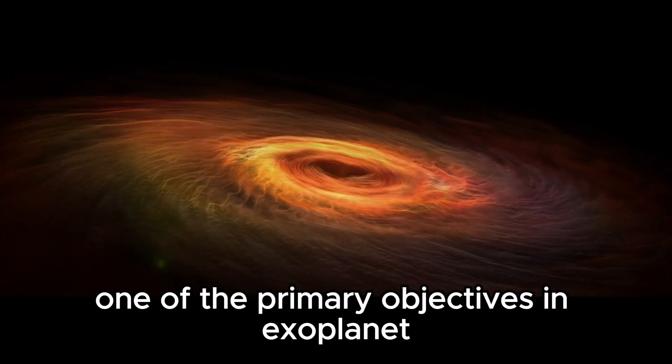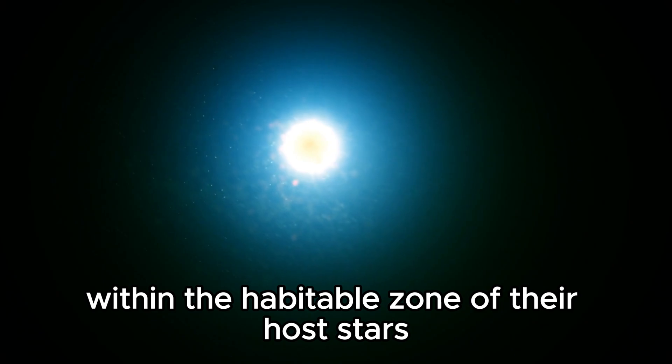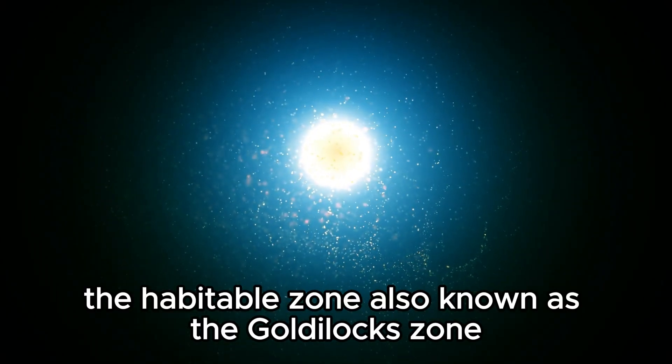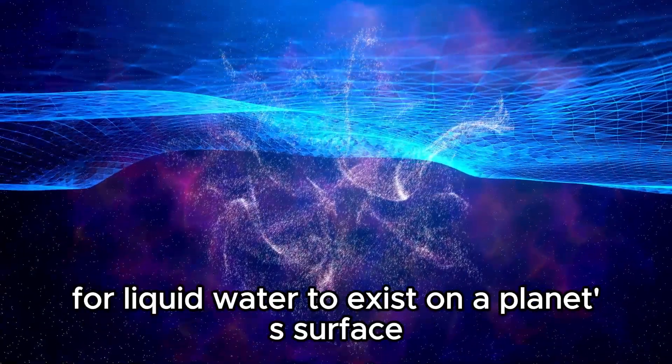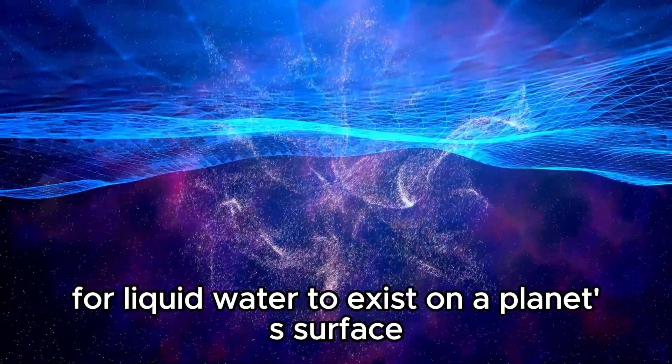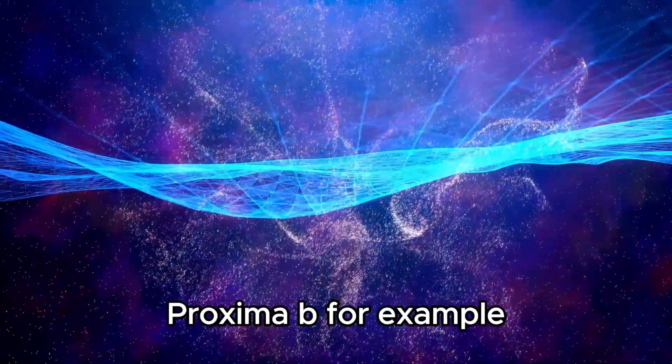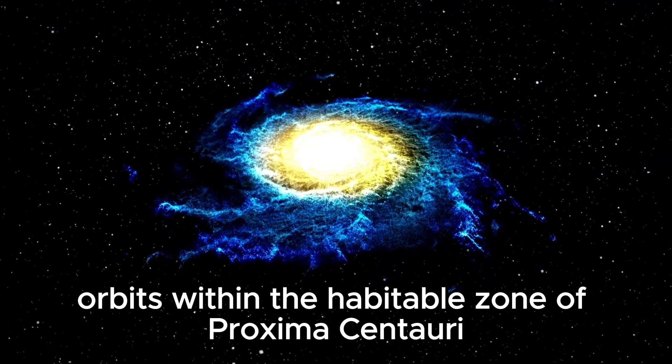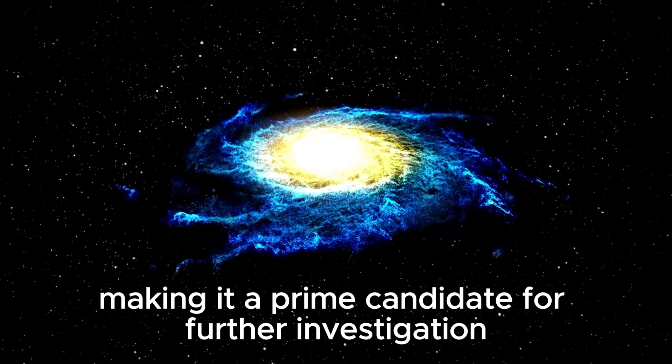One of the primary objectives in exoplanet research is to identify planets within the habitable zone of their host stars. The habitable zone, also known as the Goldilocks zone, refers to the region around a star where conditions may be just right for liquid water to exist on a planet's surface, an essential ingredient for life as we know it. Proxima b, for example, orbits within the habitable zone of Proxima Centauri, the closest star to our sun, making it a prime candidate for further investigation.